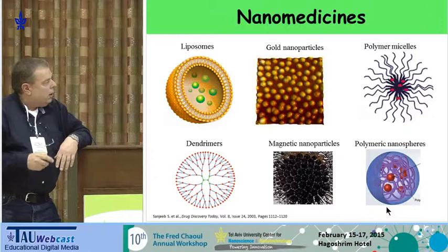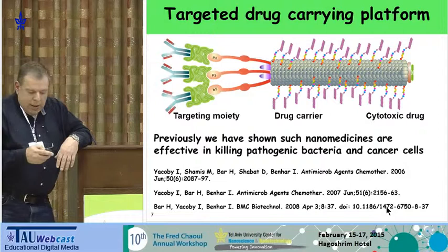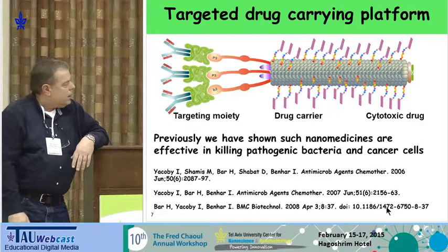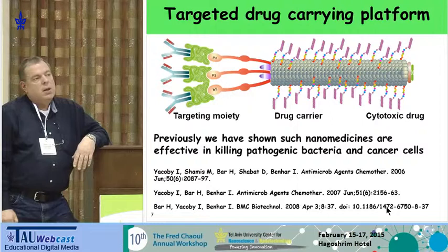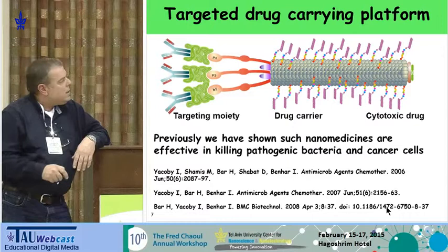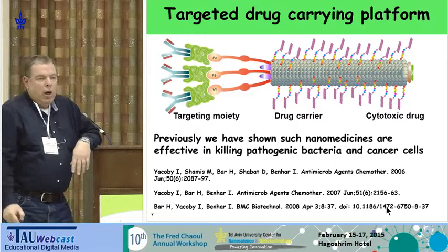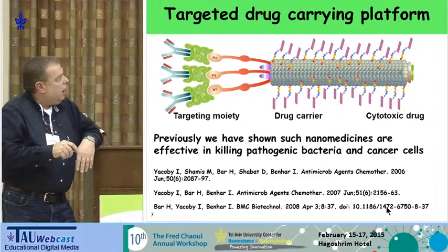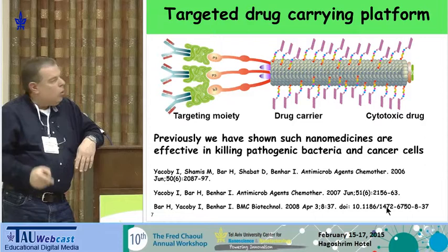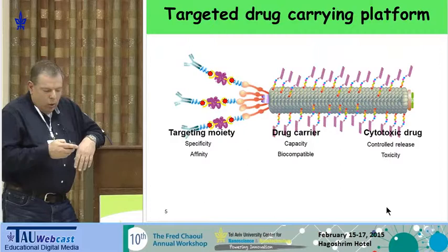This is actually a modular system. If we change the antibody at the end, we can target every disease cell we wish — we know how to isolate antibodies that bind anything. And if we change the drug and the release mechanism, we can also drug many different pathogens. Starting in 2006, we've shown applications of this system to deliver drugs to treat pathogenic bacteria or cancer cells.